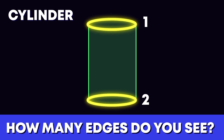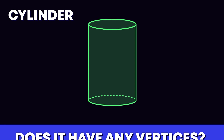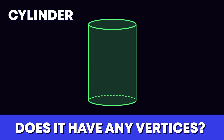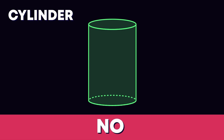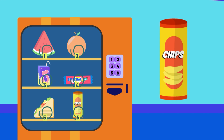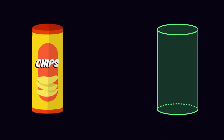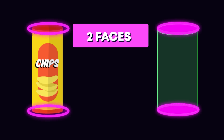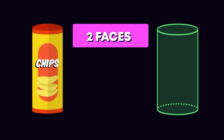Does the cylinder have any vertices? No — great thinking! Can you spot another snack with a cylinder shape? The can of chips — good spotting! It is a cylinder because it has two flat circle faces opposite each other, no vertices, and two edges.